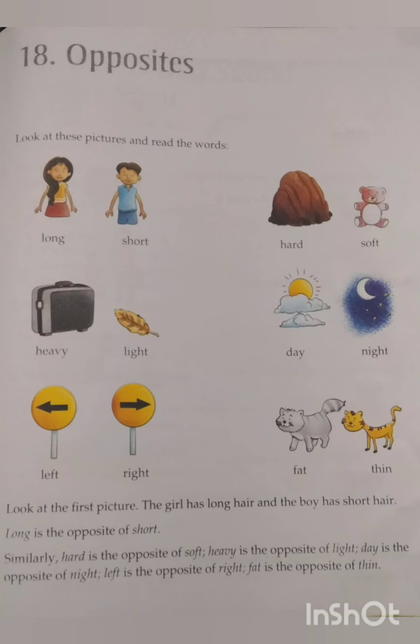Look at this picture. The girl has long hair, the boy has short hair — long is the opposite of short. Similarly, hard is the opposite of soft, heavy is the opposite of light, day is the opposite of night, left is the opposite of right, and fat is the opposite of thin.